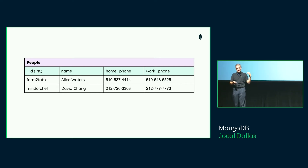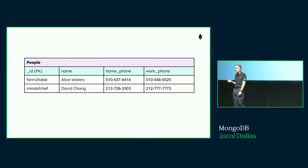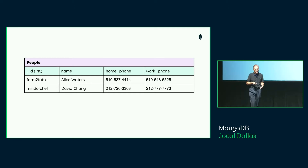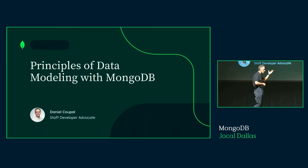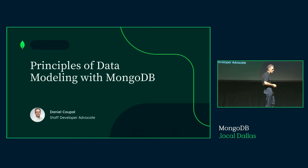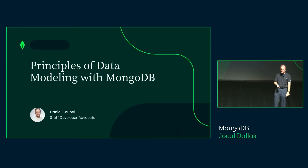The great thing is, if the design is still alive, it's because it was a successful application. But when we modeled people a long time ago, we would have a table with a column for a home phone and a column for the work phone. That doesn't work anymore. So how do you go and modernize these applications without downtime? That's one of the things we'll be talking about today. Welcome to my talk, Principles of Data Modeling with MongoDB.